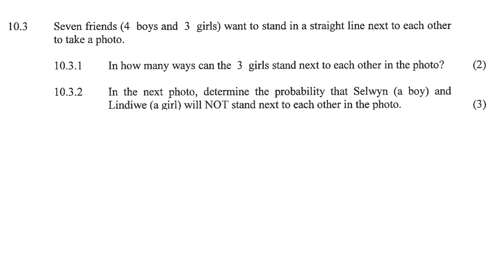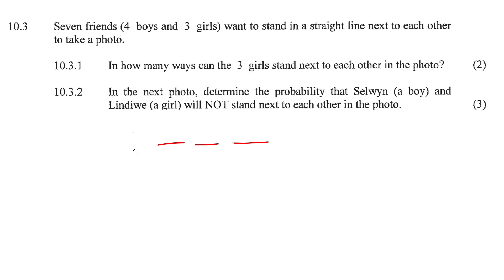Seven friends — four boys and three girls. Let's quickly draw them out. So we've got boy one, boy two, boy three, boy four, and three girls. They want to stand in a straight line next to each other, because that's what friends do, to take a photo.